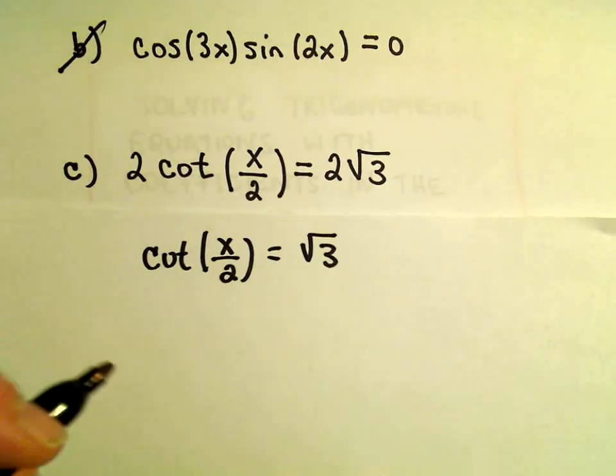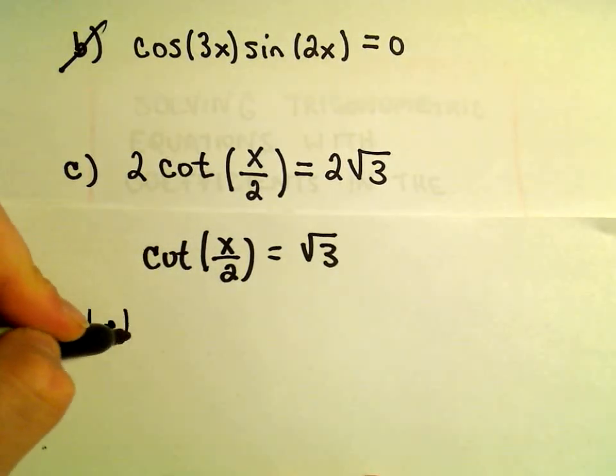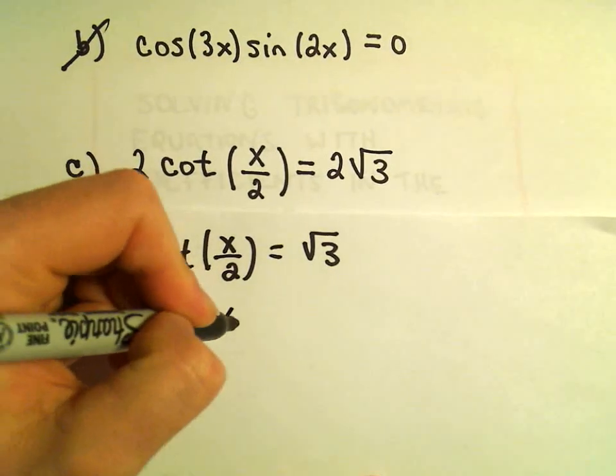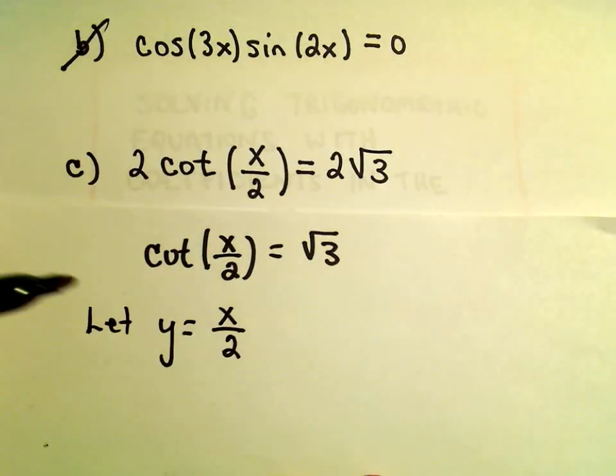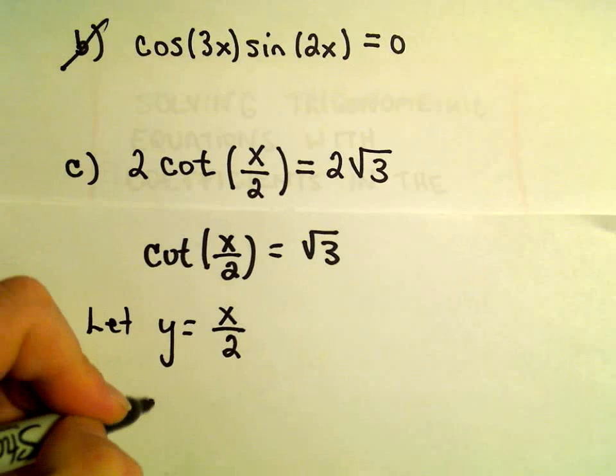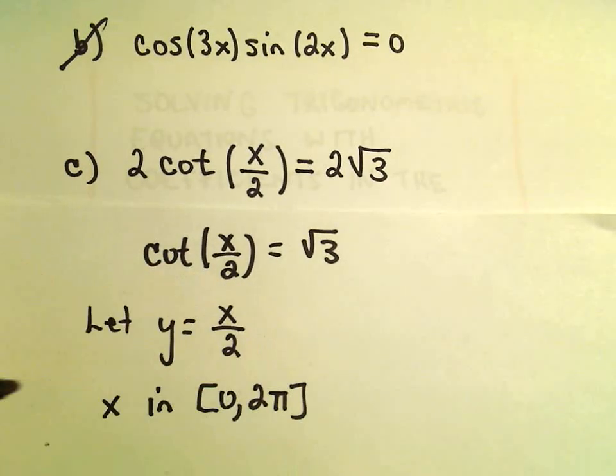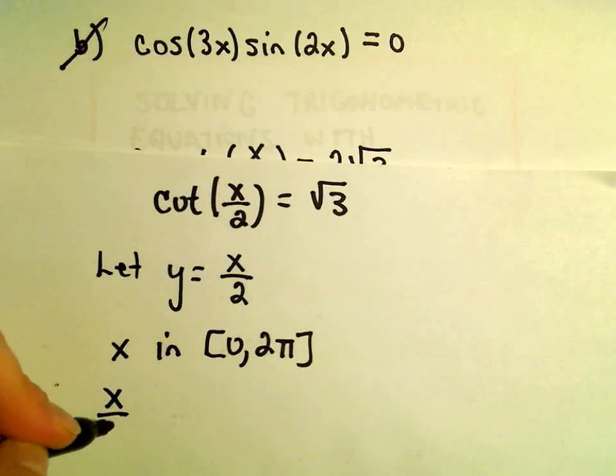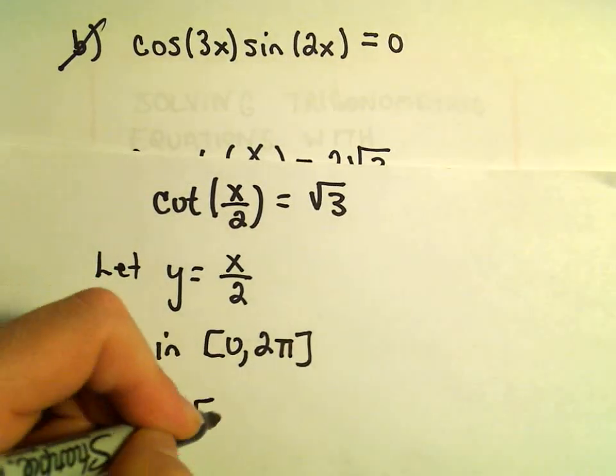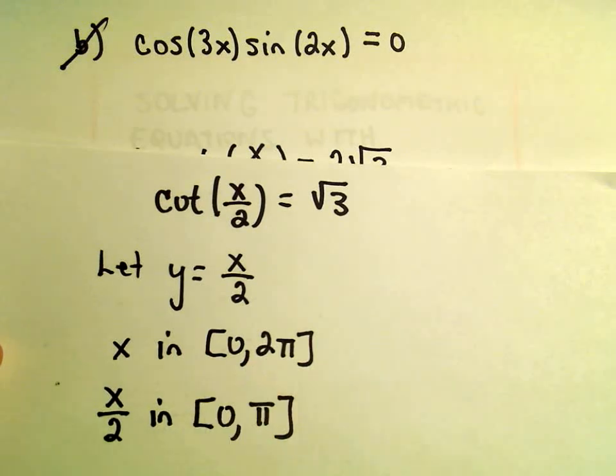So I'm going to do a replacement here. I'm going to let y equal x over 2. And since x was originally in the interval 0 to 2 pi, that means x over 2, solutions to that would have to be in the interval 0 to pi. I'm just basically taking half of everything.